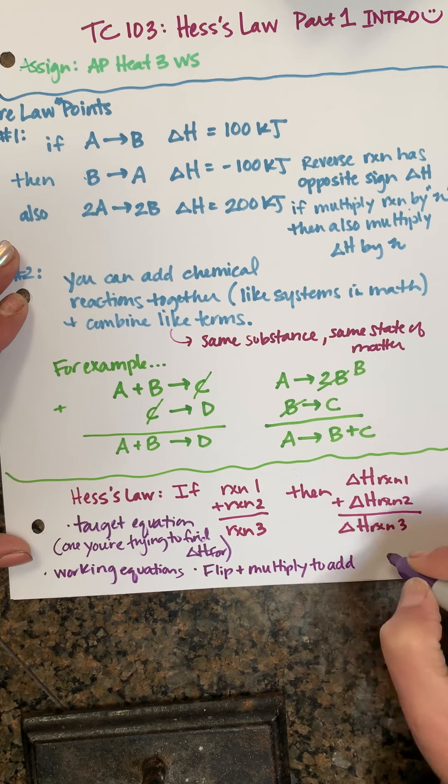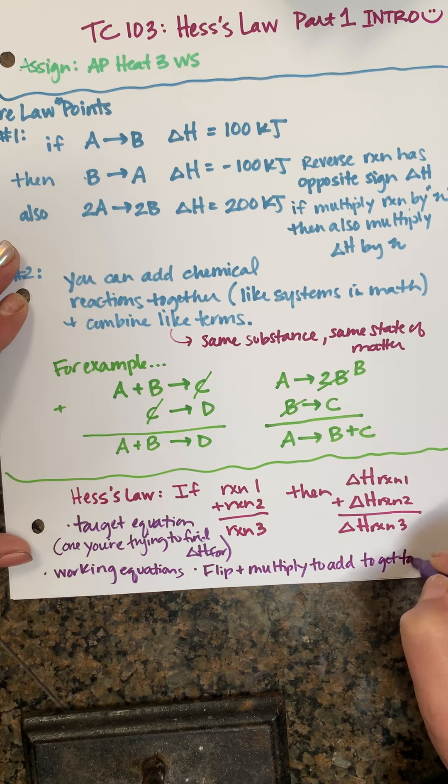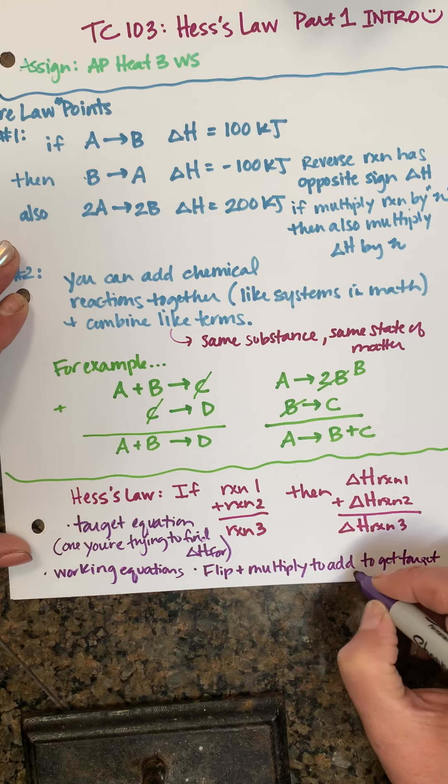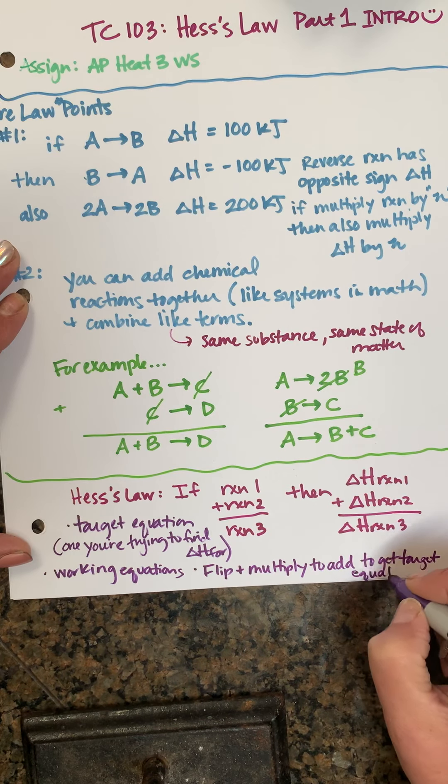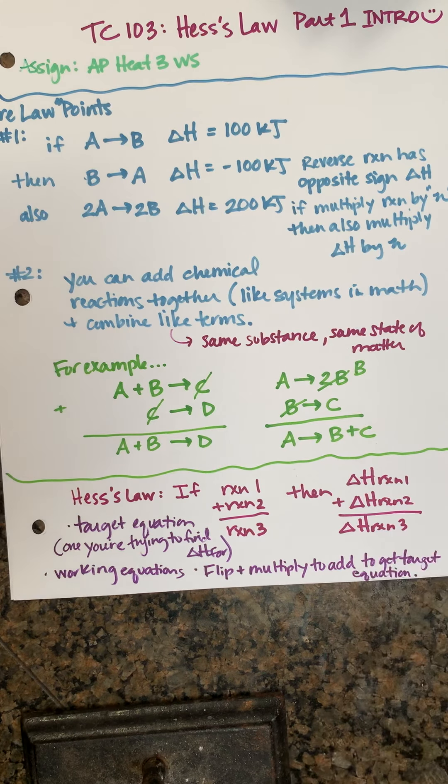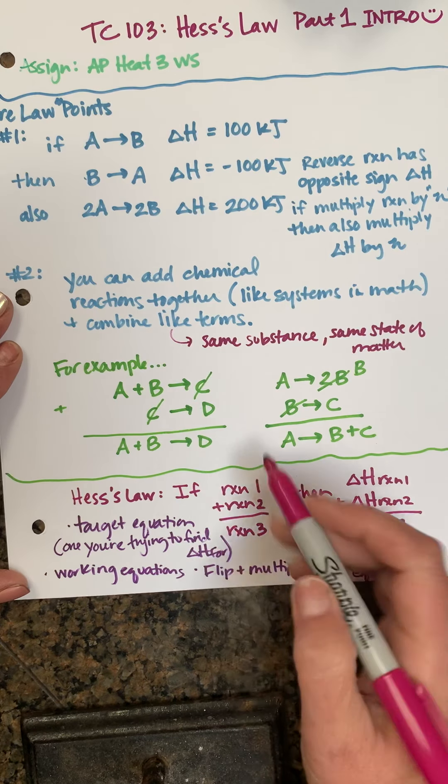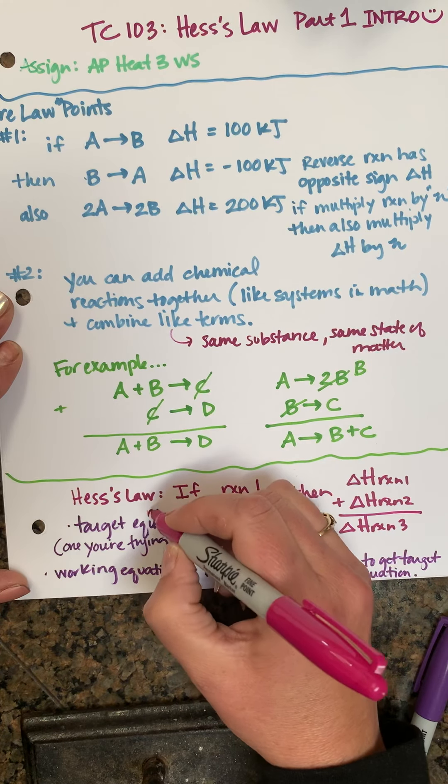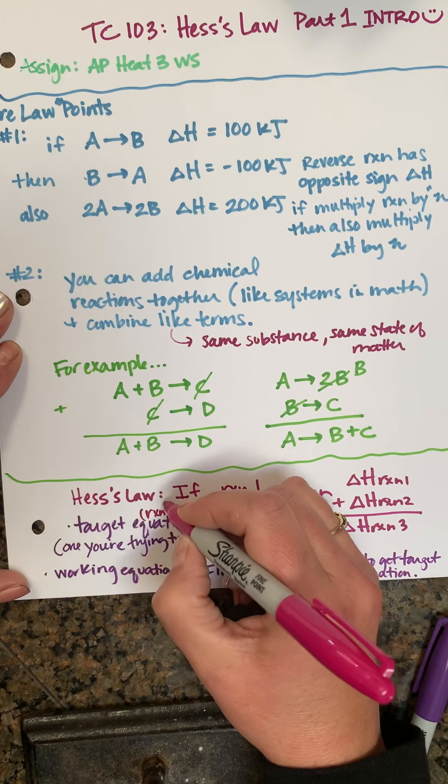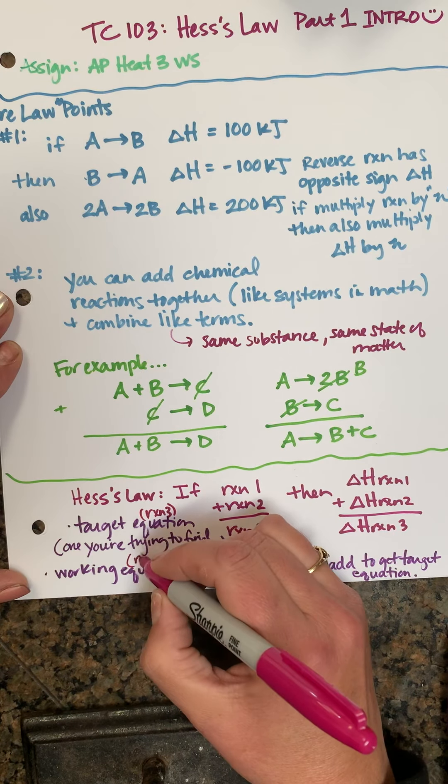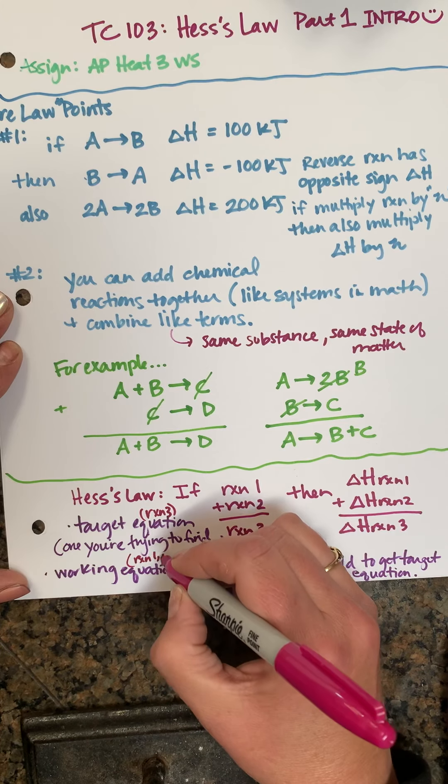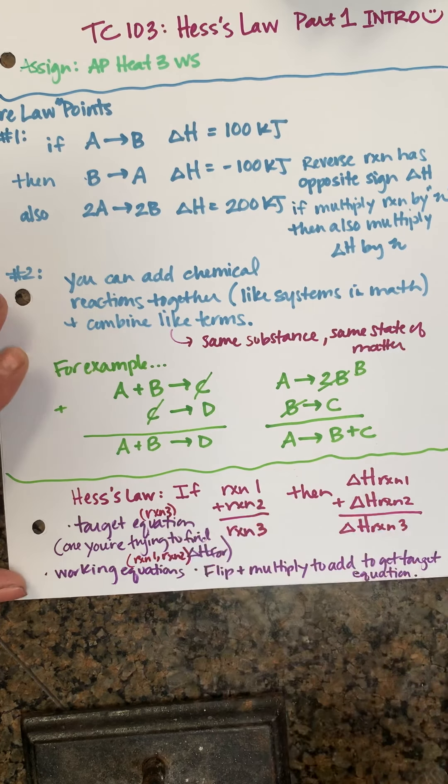To add to get the target equation. So you have target equations and working equations. In my example over here, the target equation would be reaction 3 as an example, and the working equations would be reactions 1 and reactions 2 here.